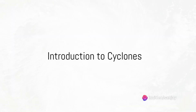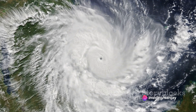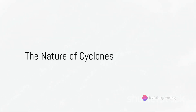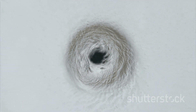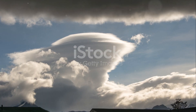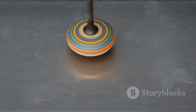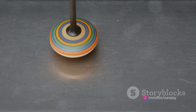Have you ever wondered how cyclones form and what makes them so powerful? Well, you're about to find out. A cyclone is a massive air mass that rotates around a strong center of low atmospheric pressure. Picture a giant spinning top, only this one is made of air and can't be seen with the naked eye.